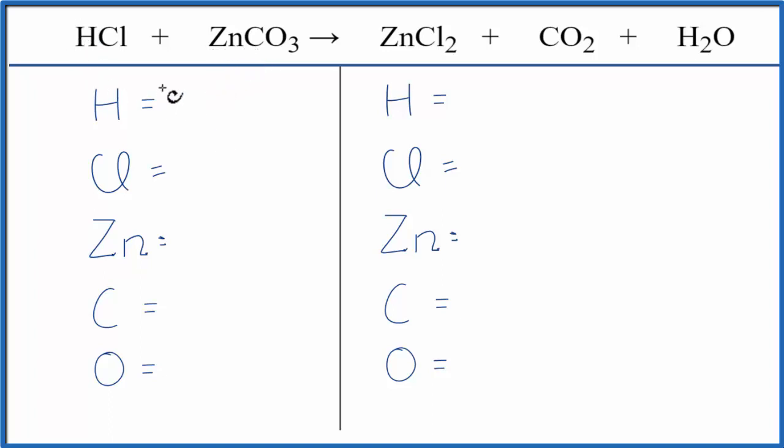Let's count the atoms up. We have one hydrogen, one chlorine, one zinc, one carbon, and three oxygens.